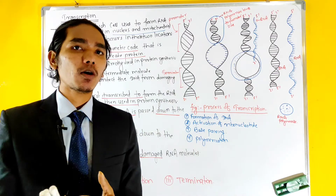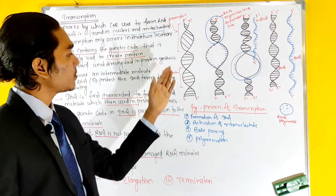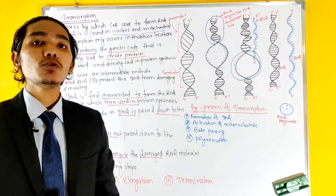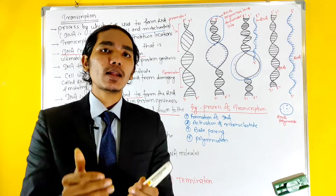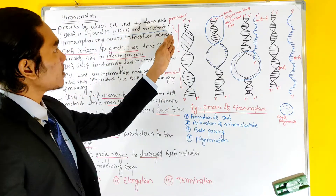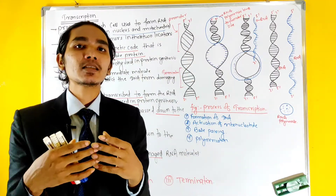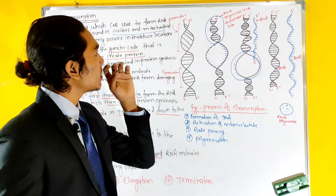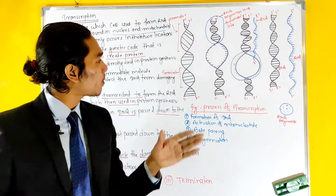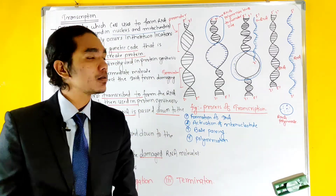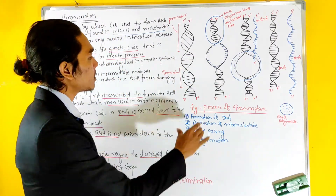In the figure, we have double-stranded DNA. The DNA has polarity — 5' to 3' on one strand and 3' to 5' on the other. This is called DNA polarity. There is a promoter region, which is where transcription starts, and a terminator region, which is where transcription ends.